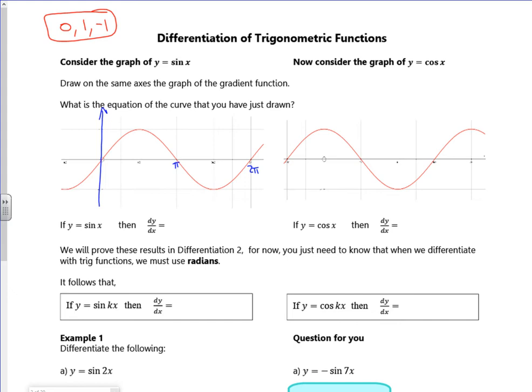So if I look at 0, the gradient is 1, so I'm going to put a point there. If I look at pi by 2, the gradient is 0. If I look at pi, the gradient is minus 1. If I look at 3 pi over 2, the gradient is 0. If I look at 2 pi, the gradient is 1.